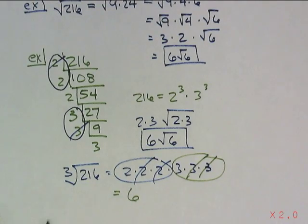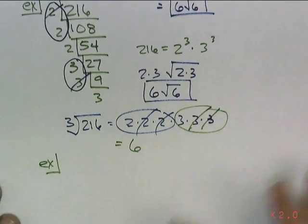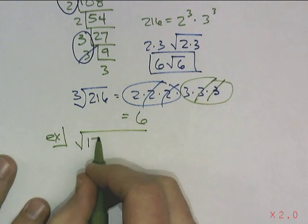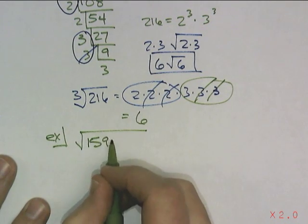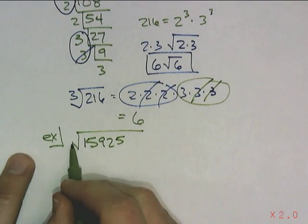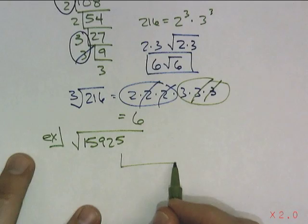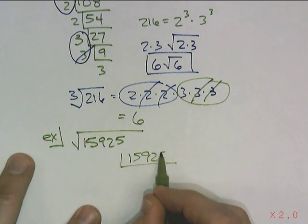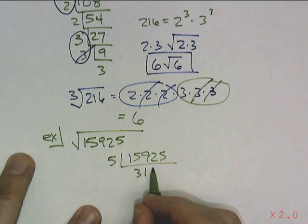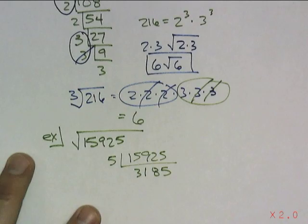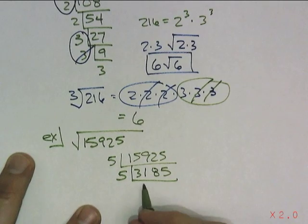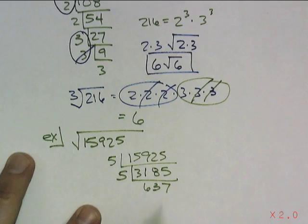Let's do one more example — you can pause and see if you can do it, then check if I did it right. The square root of 5925. I'm going to first do a prime factorization. 5925 is divisible by 5, which goes in 1185 times. That one is also divisible by 5, which goes in 237 times.